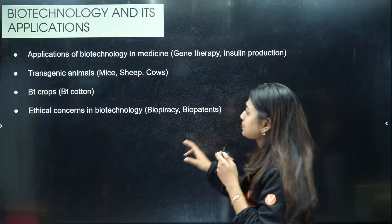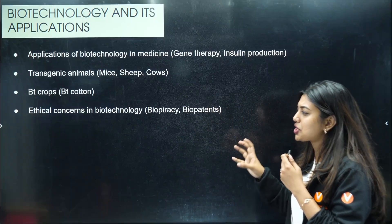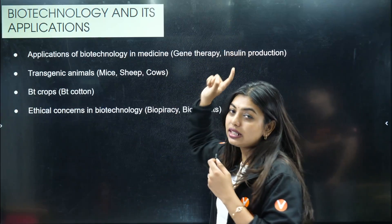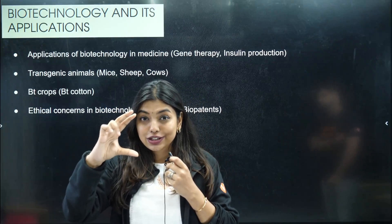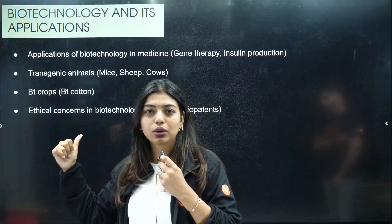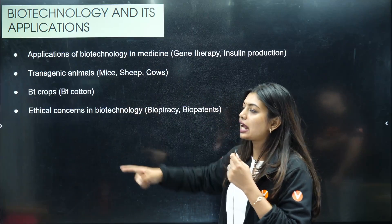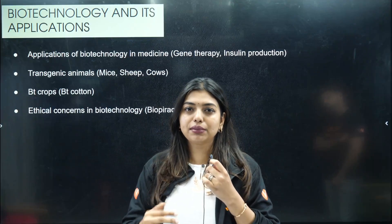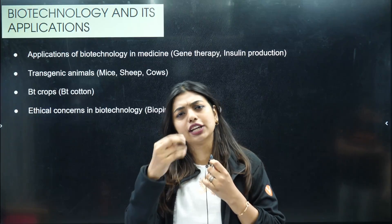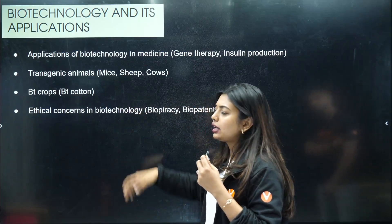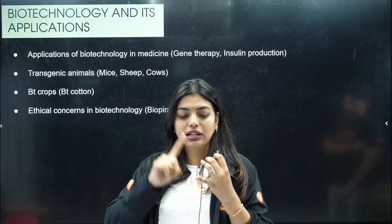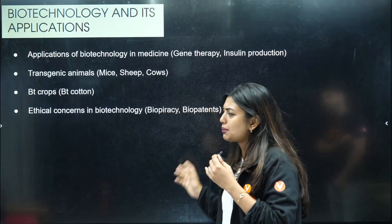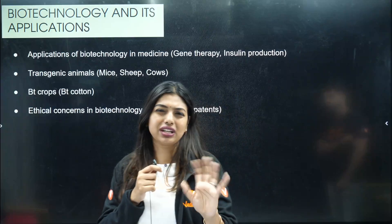Try to learn it one day before the exam. Going to the applications — applications are usually very easy questions. Gene therapy — they will ask you. Insulin — they have asked multiple times; learn what is given in that insulin paragraph. Transgenic animals — they have asked what is the use of transgenic animals; five or six points have been given, learn those six points — just know the headings and you can write about it. Bt cotton — Bacillus thuringiensis — a one-mark question or MCQ/fill-in-the-blanks can come. Biopiracy and biopatent — they will only ask the definition, nothing more than that.